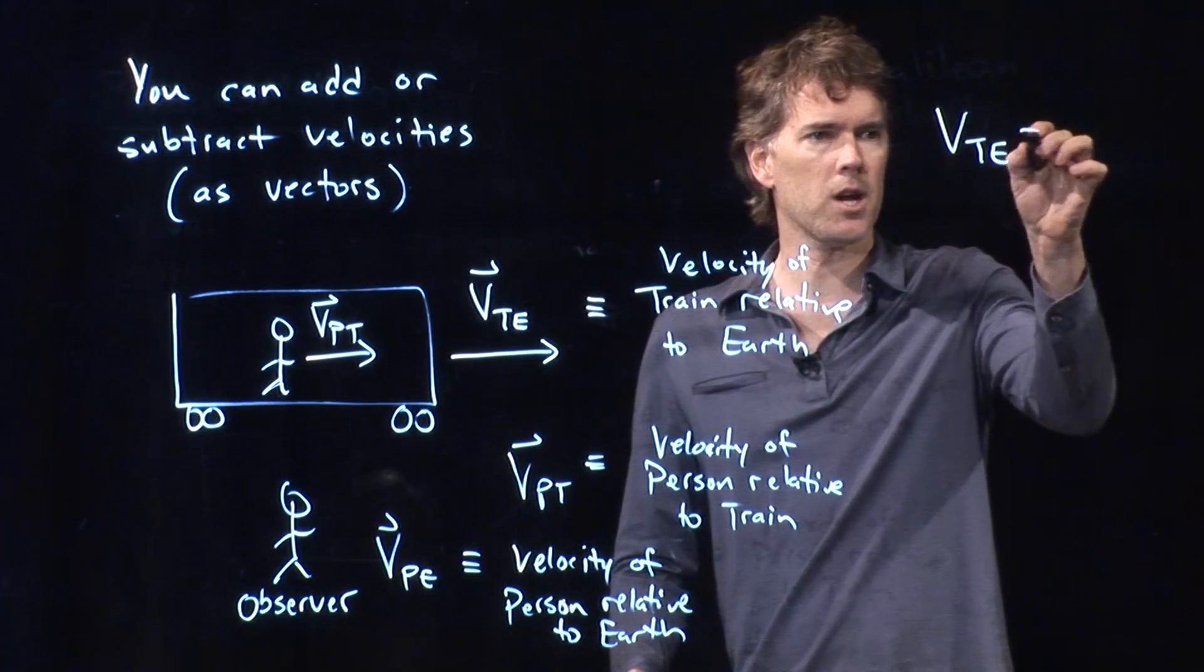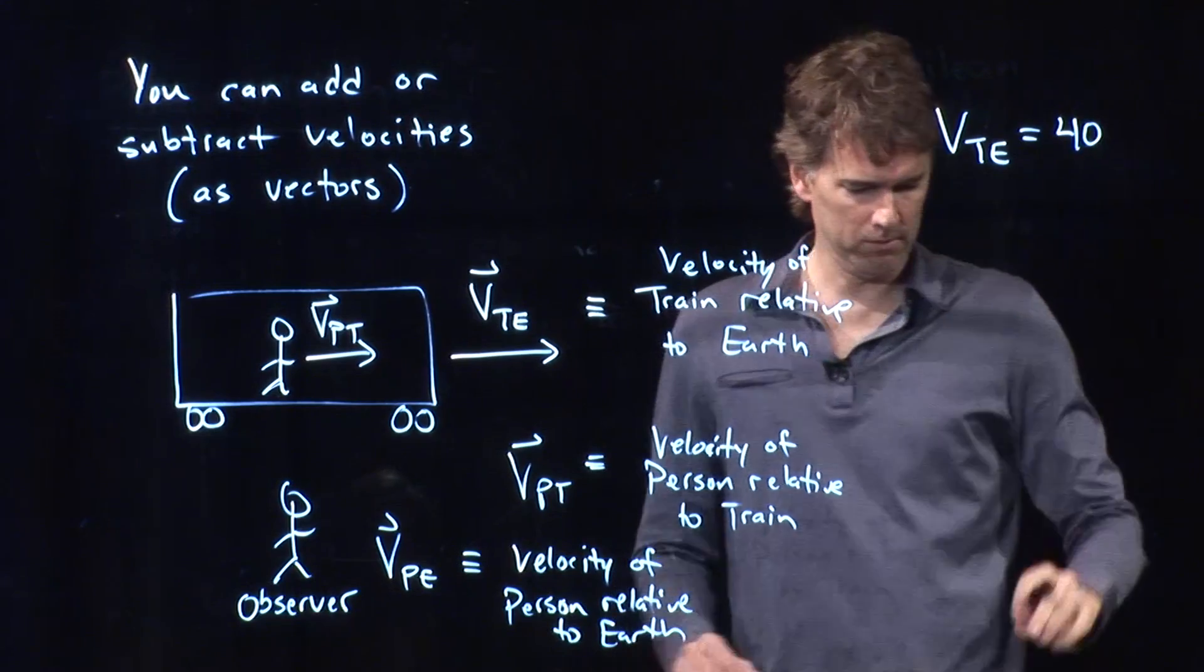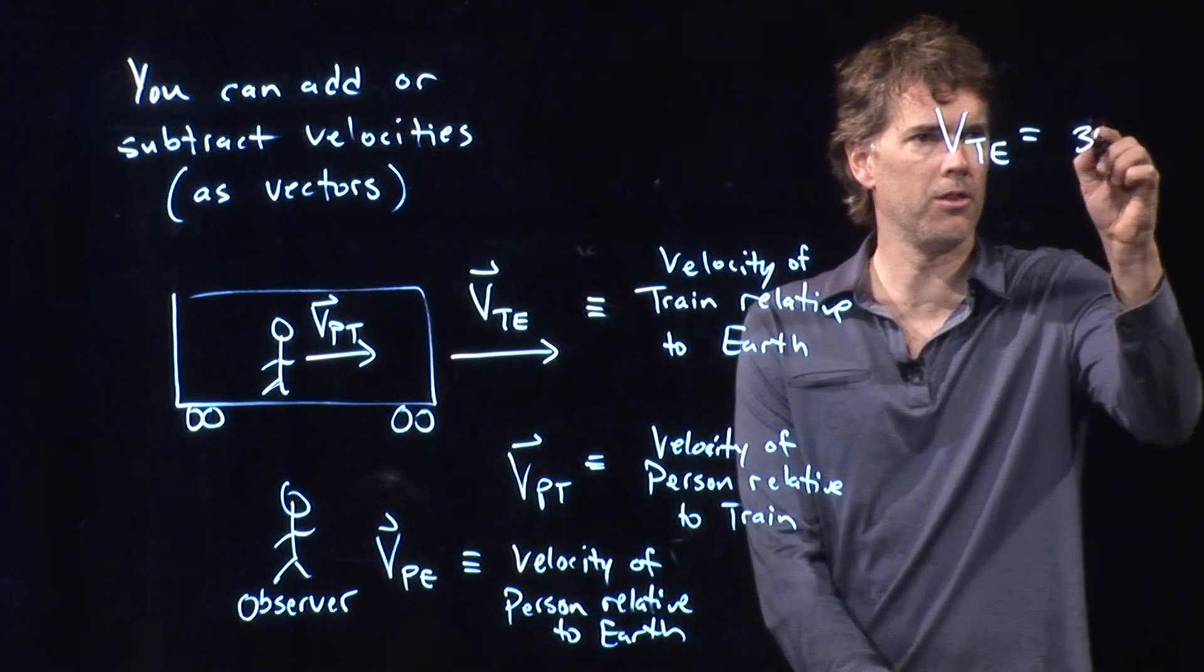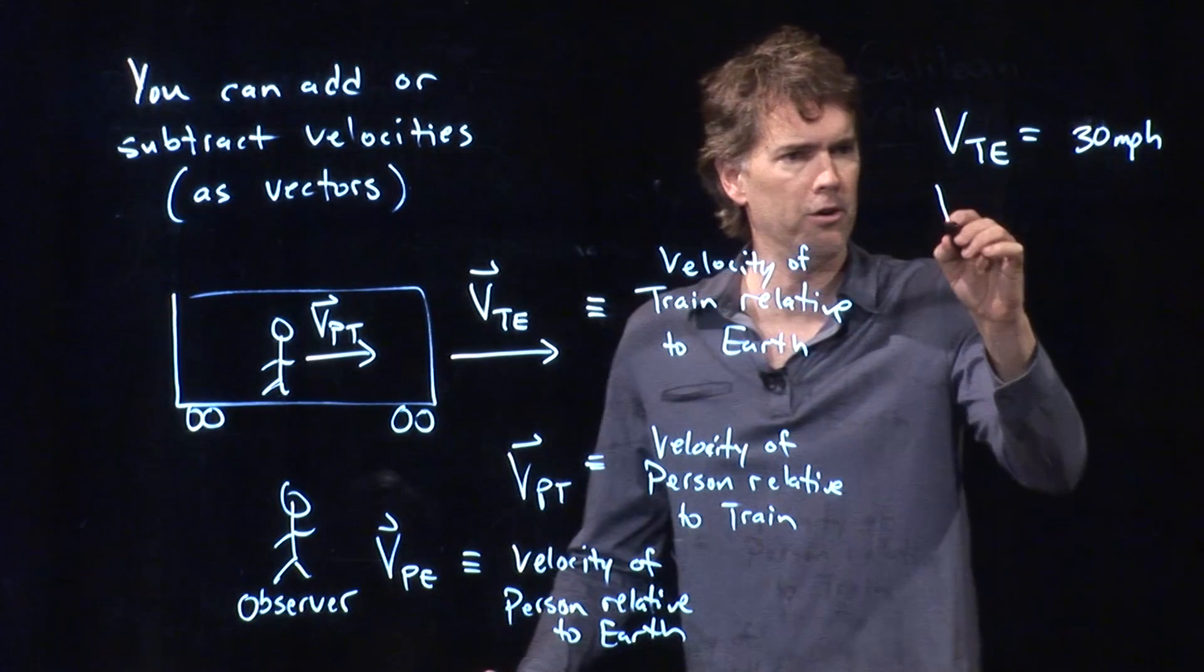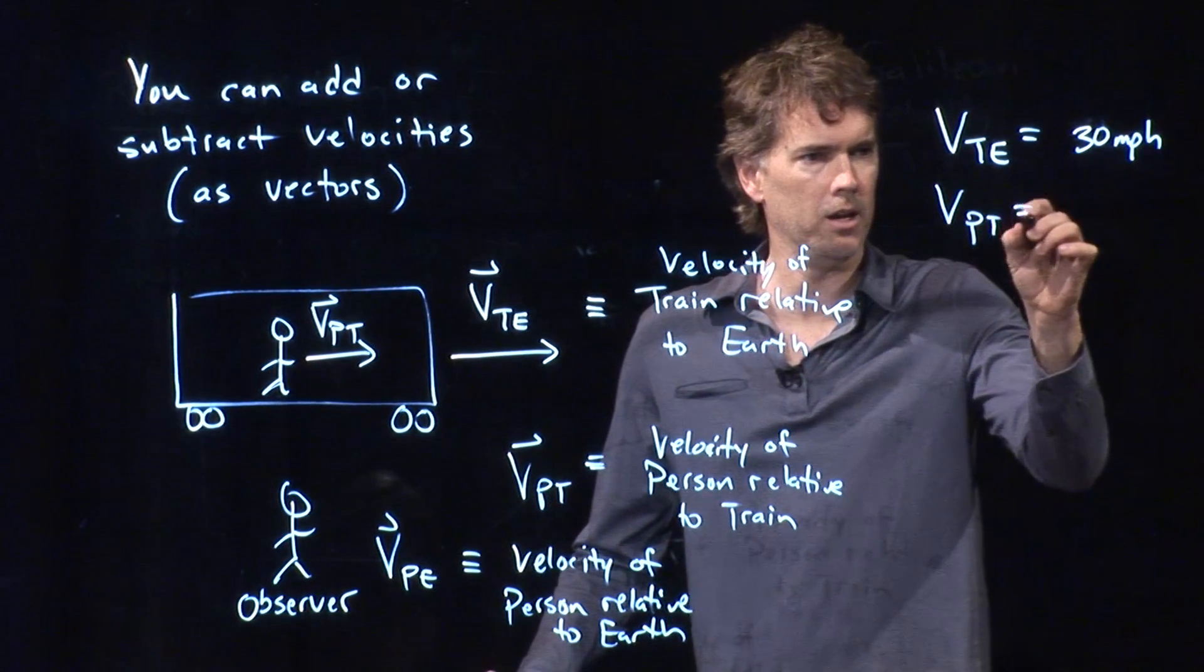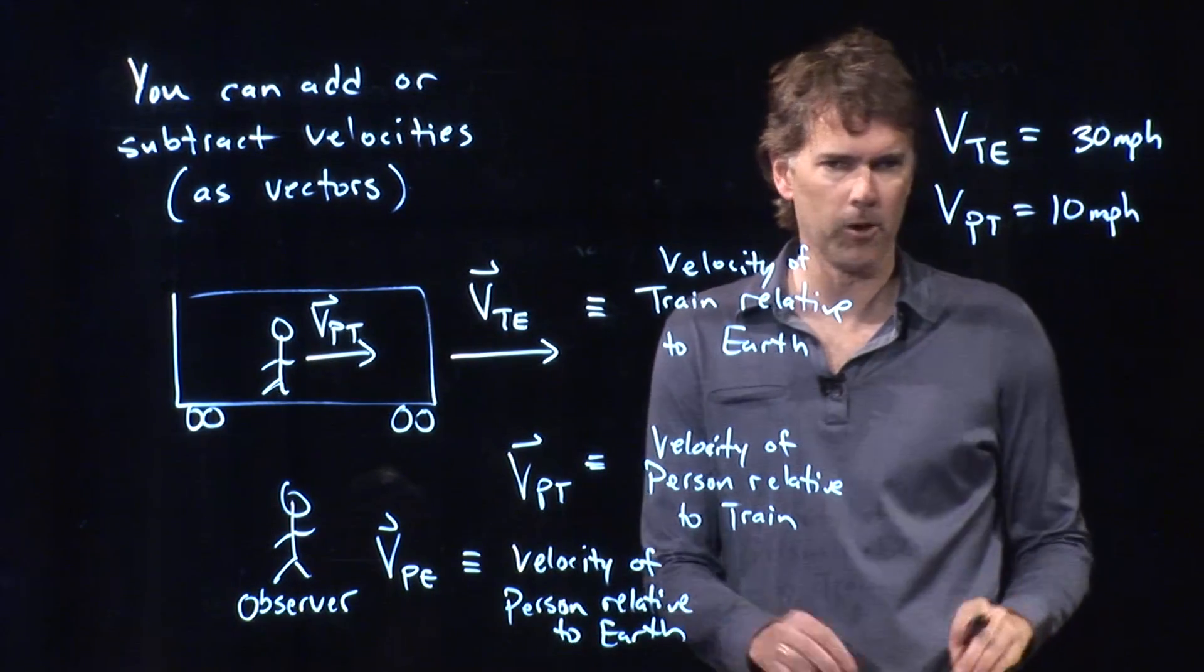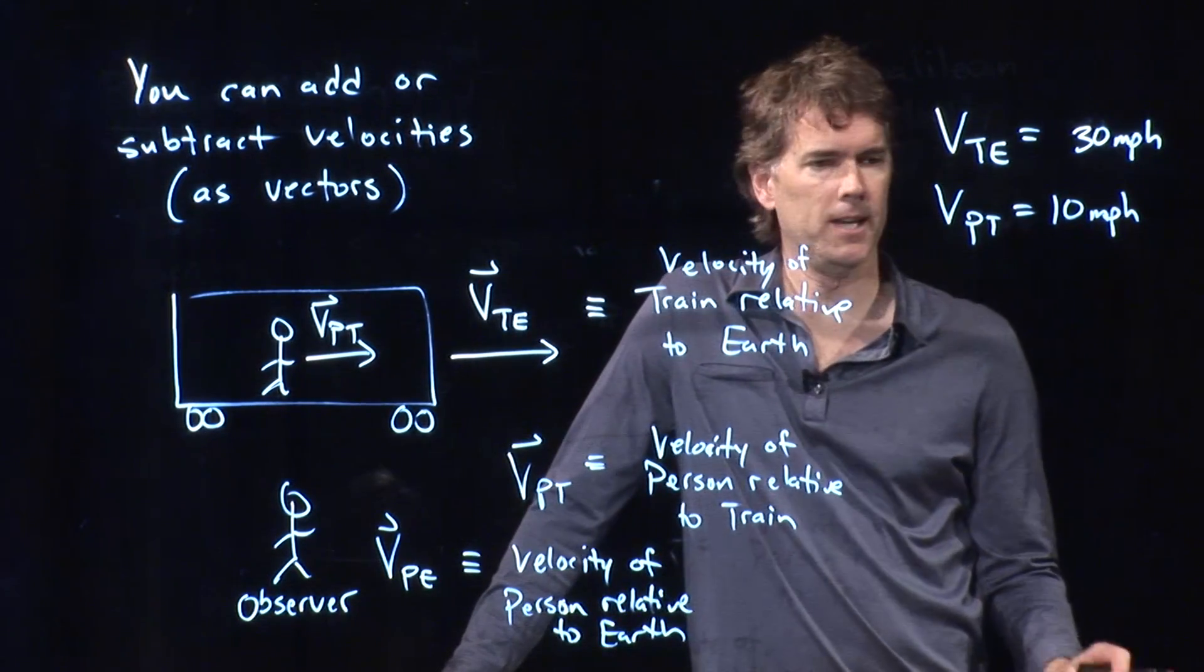So let's put the values on it like that. Let's say that the speed of the train relative to the Earth is 30 miles per hour, 30 MPH, and the speed of the person on the train is 10 miles per hour. Maybe faster than a walk, more like a run.